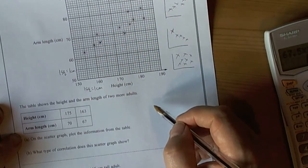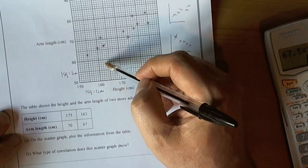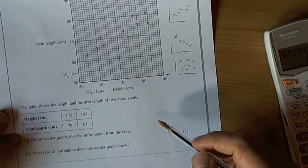So we plotted those two points carefully and just do a double check. So 67 and down to 163. That seems fine.